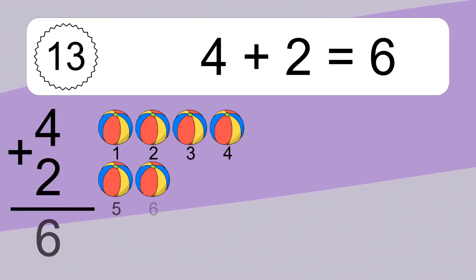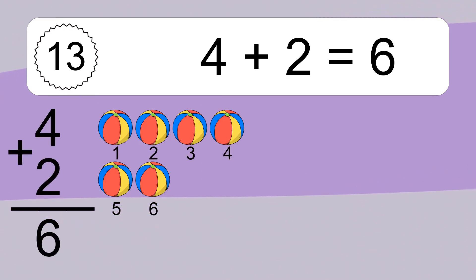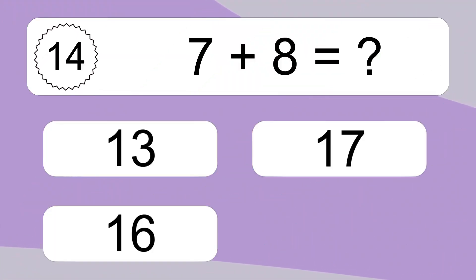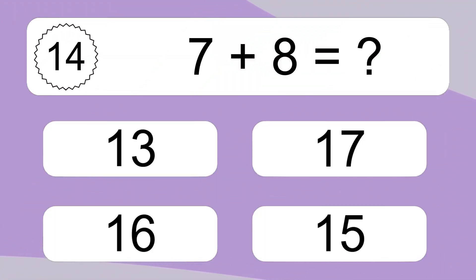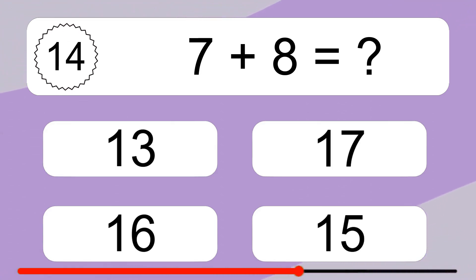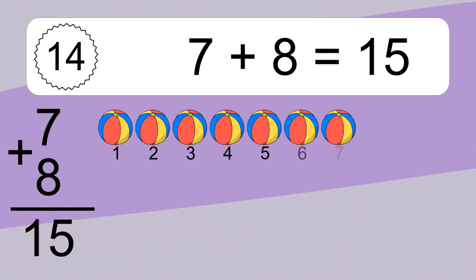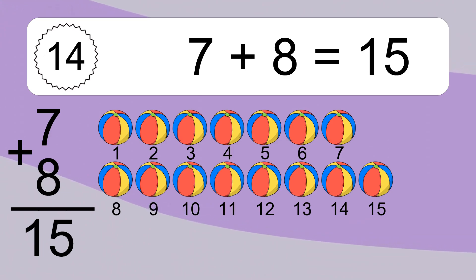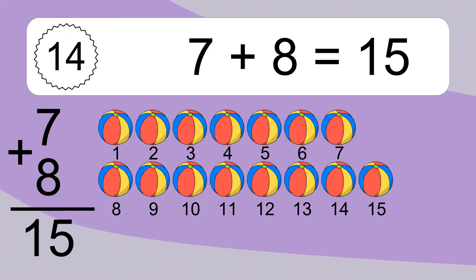4 plus 2 equals 6. Let's count it: 1, 2, 3, 4, 5, 6. 7 plus 8 equals what? 7 plus 8 equals 15. Let's count it: 1, 2, 3, 4, 5, 6, 7, 8, 9, 10, 11, 12.